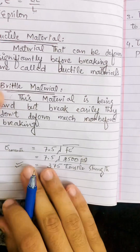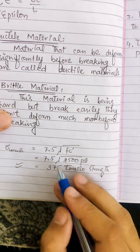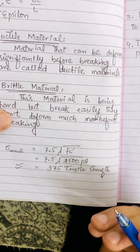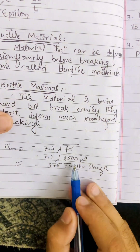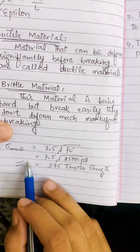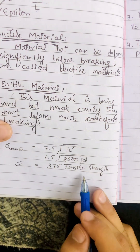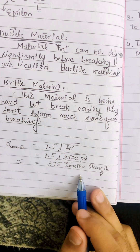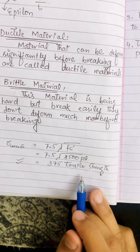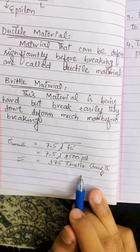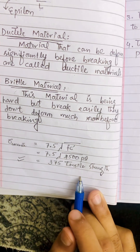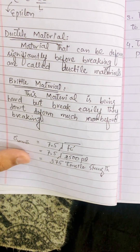For concrete strain, the formula is 7.5 × √(f'c), where f'c is the compressive strength in psi. For 2500 psi concrete, the tensile strength calculates to approximately 375 psi. Because concrete has low tensile strength, we use steel reinforcement in building construction to increase tensile capacity and enable construction of large structures. Thank you very much.